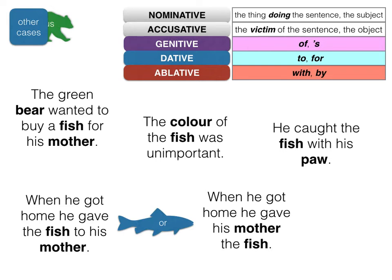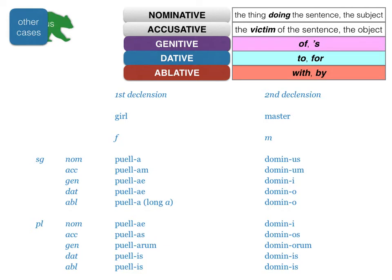When he got home he gave the fish to his mother — fish is being given so fish is accusative, and 'to his mother' means mother is dative. Note: 'he gave his mother the fish' is the same as 'he gave the fish to his mother'. Similarly, 'I give a student a commendation' is the same as 'giving the commendation to the student'. Be careful, because sometimes datives are hidden — they don't have the word 'to' or 'for' because the meaning is implied.